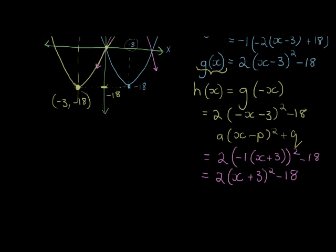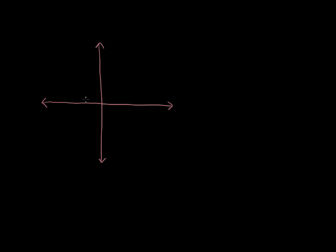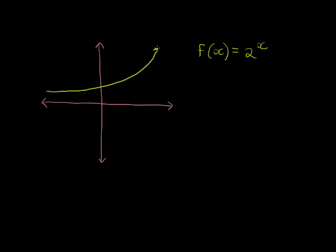Now we're going on to reflecting the exponential function, and that really makes it much easier to understand. Let's look at a simple one: f(x) equals 2 to the power of x. You should know that this is the shape it makes. The y-intercept is where x equals 0, and 2 to the power of 0 equals 1, so it cuts the y-axis at 1.